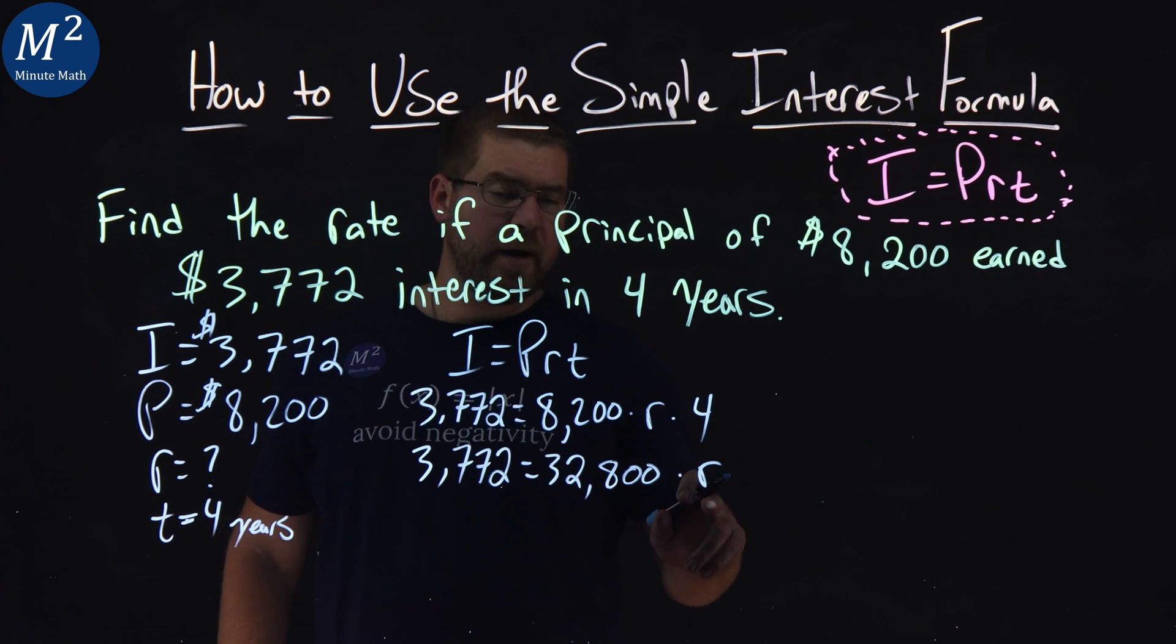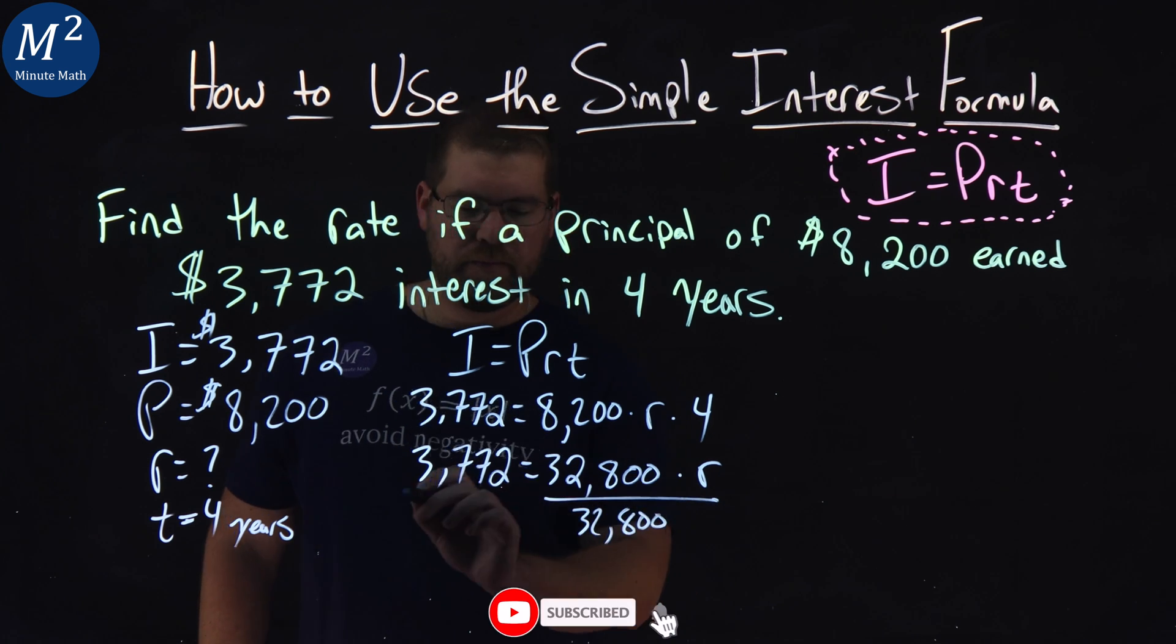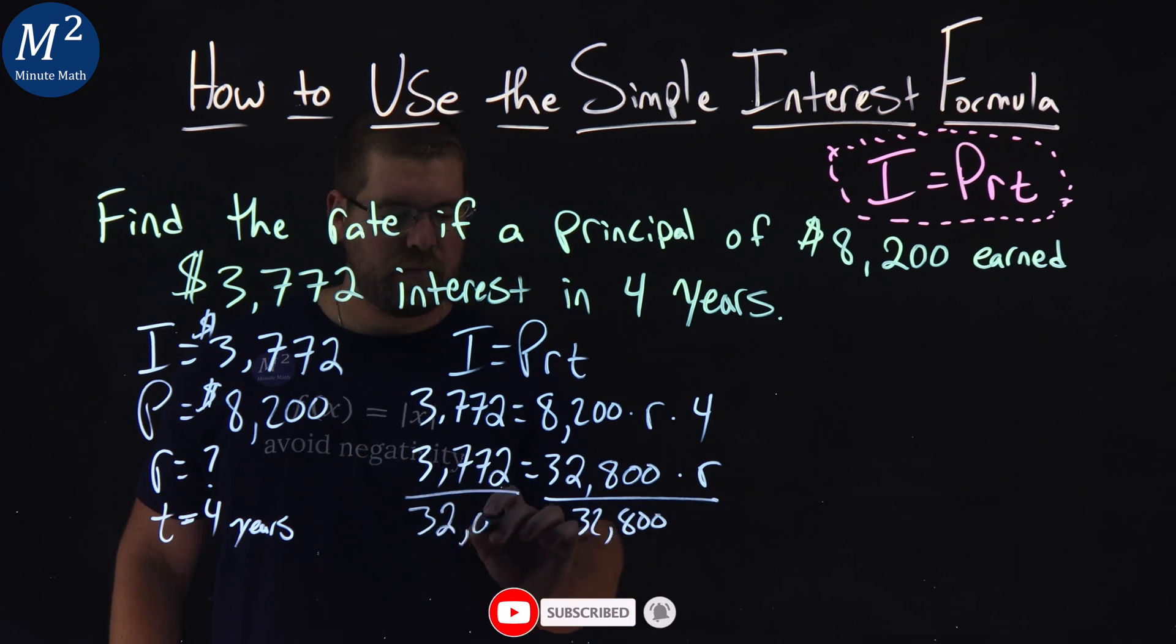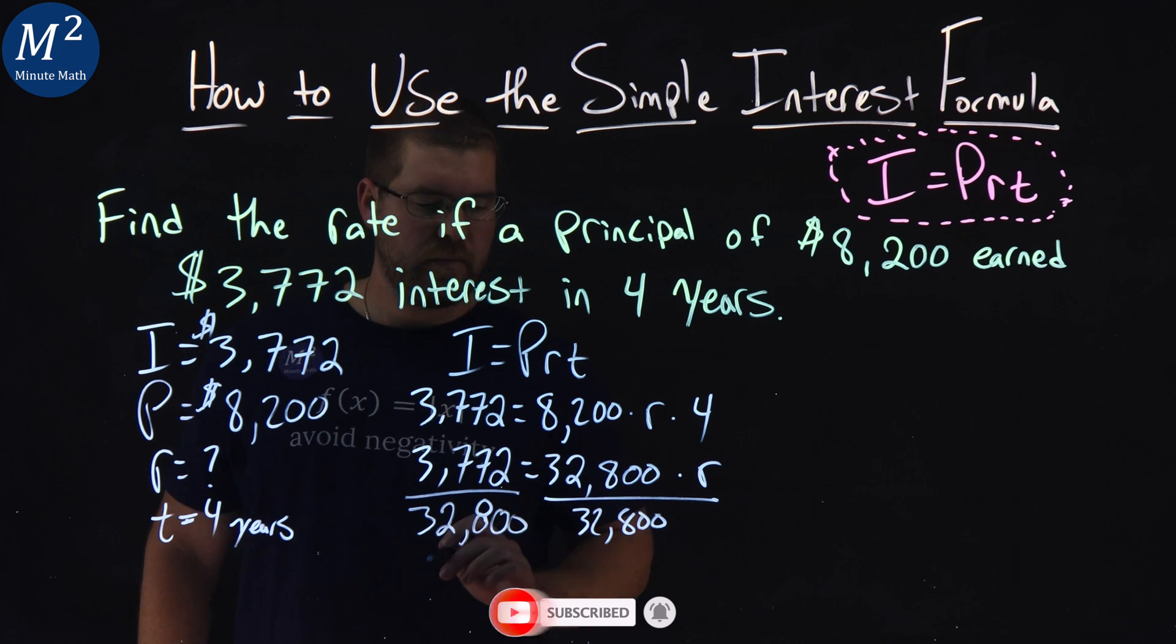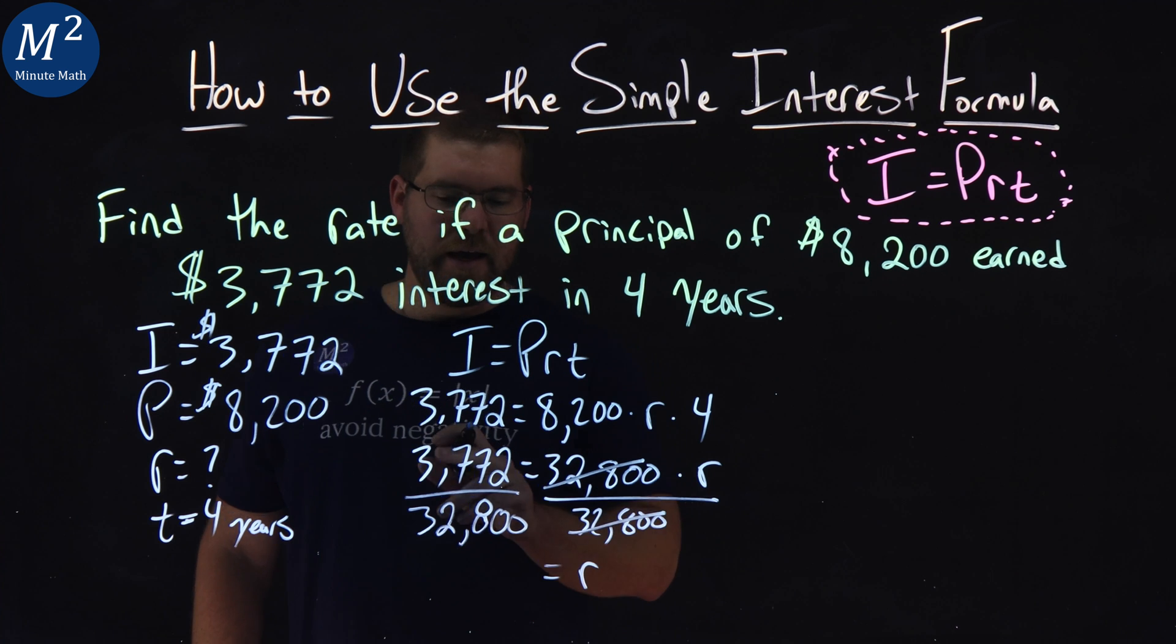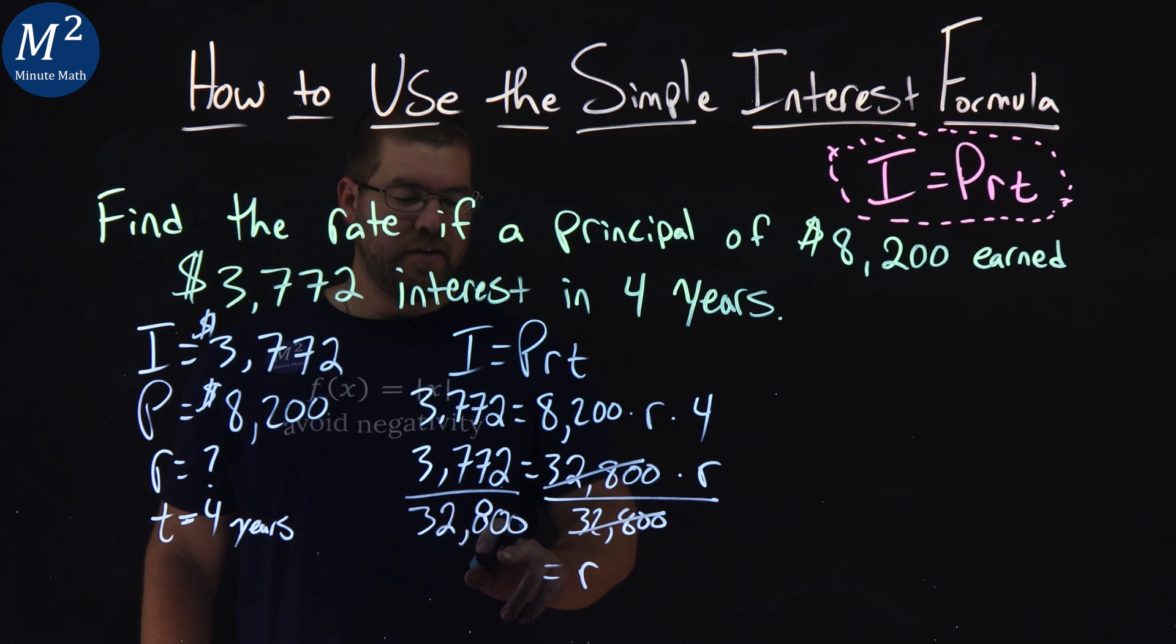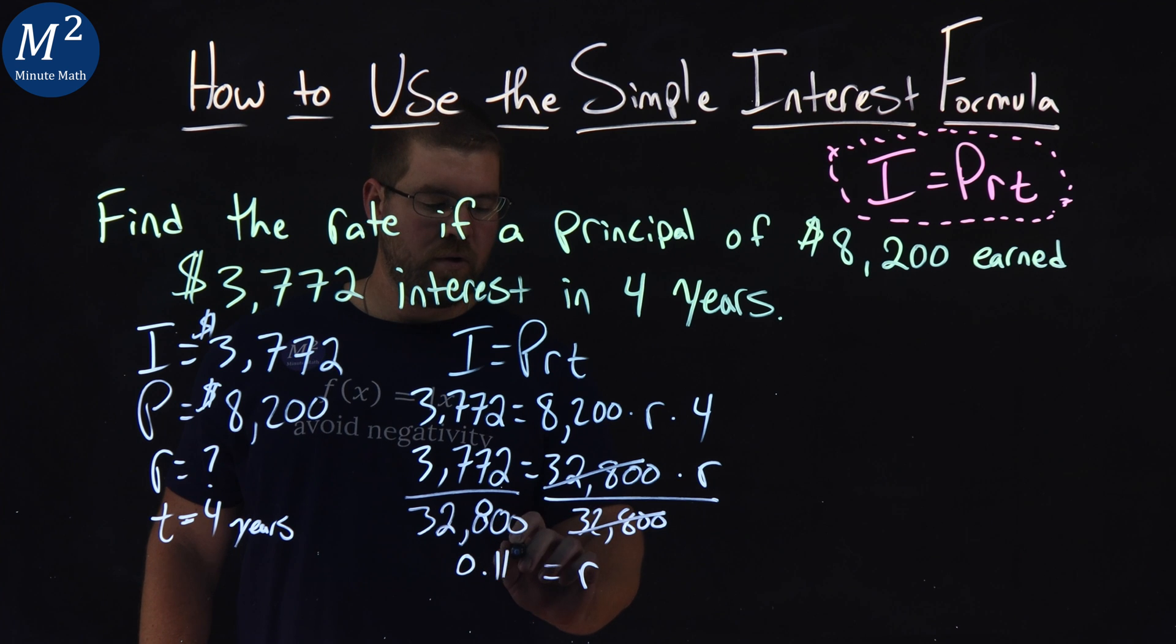We want to get R by itself, so we divide that $32,800 to both sides. Right here, we're left with R by itself. This cancels, and $3,772 over $32,800 is $0.115.